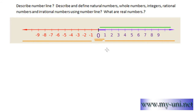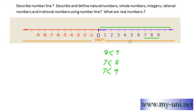If a number is to the left of another, it is smaller. So eight is to the left of nine, meaning eight is less than nine. Seven is to the left of eight, so seven is less than eight. Conversely, if a number is to the right of another, it is greater. For example, five is to the right of four, so five is greater than four. Three is to the right of two, so three is greater than two.